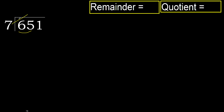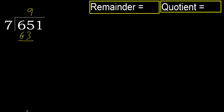With 65, 7 multiplied by which number is nearest to 65 but not greater? 7 multiplied by 9 is 63. 63 is not greater. 65 minus 63 is 2. Next.